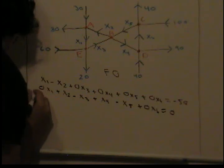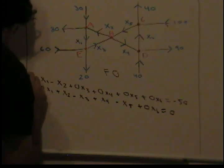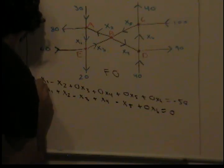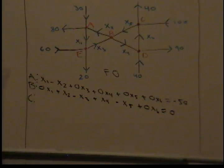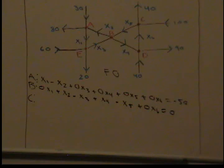For node B the equation becomes: 0·x1 plus x2 minus x3 plus x4 minus x5 plus 0·x6 equals 0. It looks like we're running out of time, so this problem will continue in the next video — just go to the video right after this and the continuation should be there.